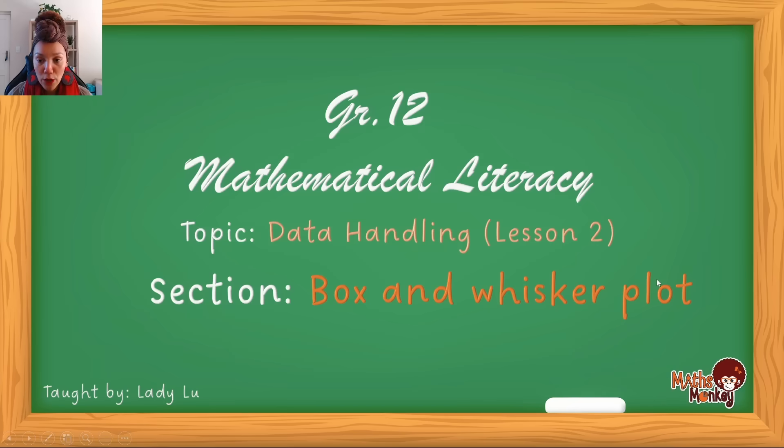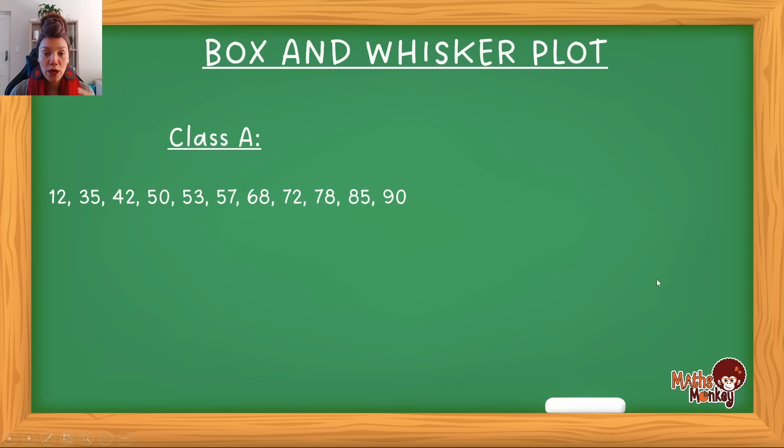Box and whisker plot is one of those sections where I've received a lot of requests in the comment sections to make a video on this. So essentially, the box and whisker plot encompasses the following. It is literally just a graph that graphically displays your five-number summary. The five-number summary is simply your minimum value, your quartile 1, quartile 2, quartile 3, and your maximum value. So the box and whisker plot is just a drawing of those five numbers.